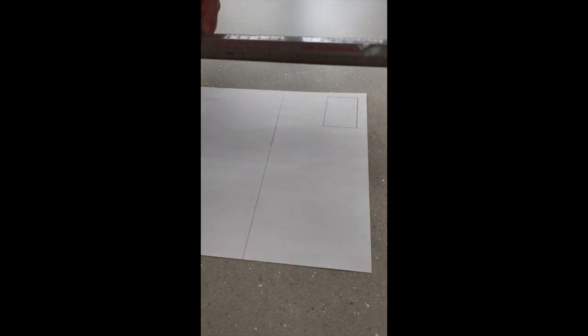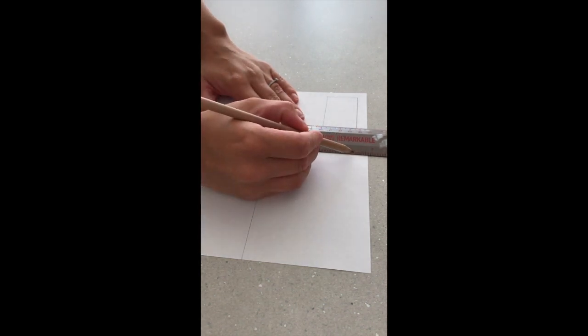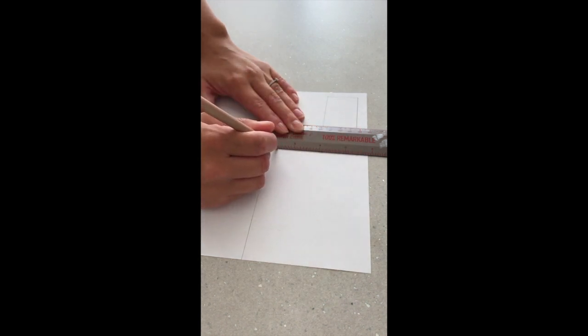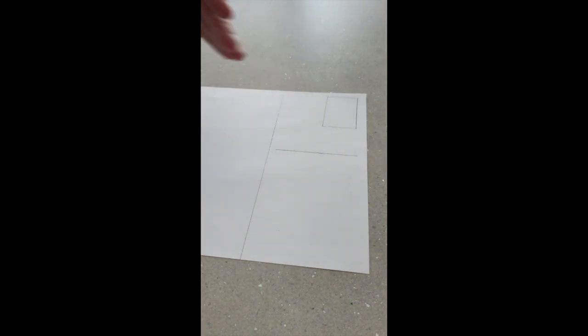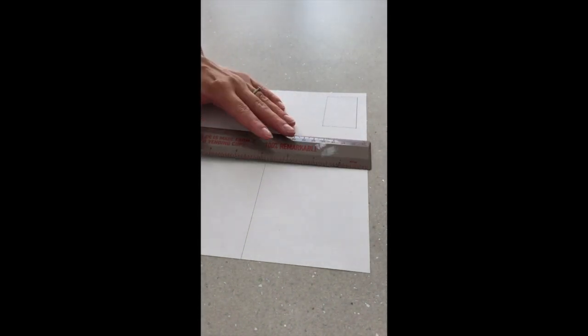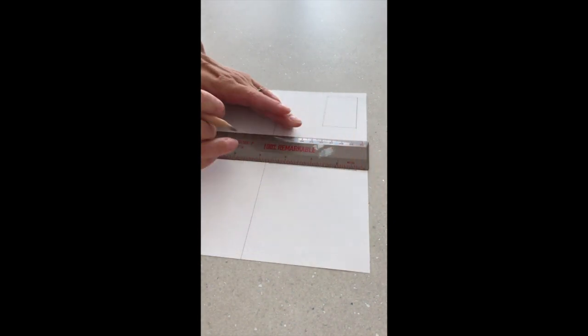Well done to those of you that have done that. So once you've done that, you need to draw about five straight lines. Don't go right from the edges, go about a centimeter in. So use your ruler to measure that, about a centimeter in, a straight line going landscape. And you need to draw about four of these.